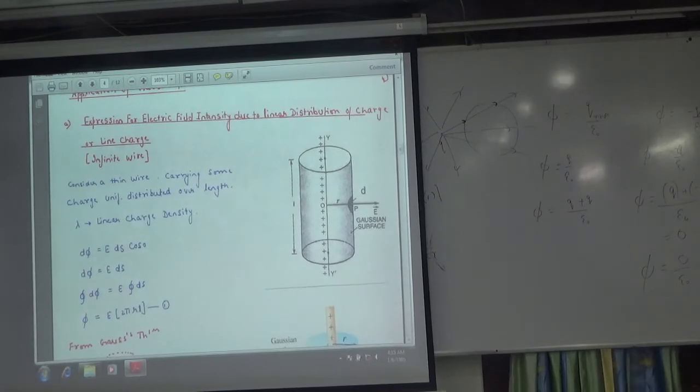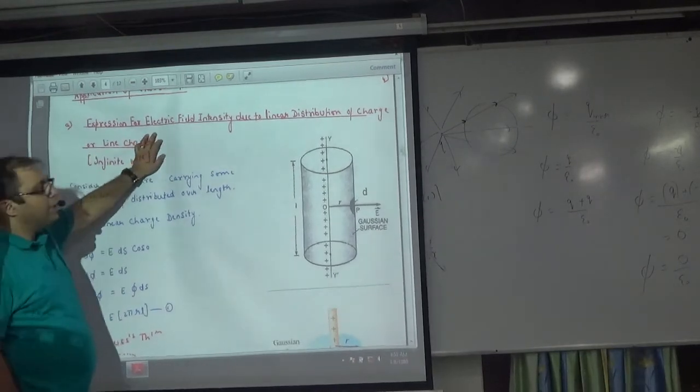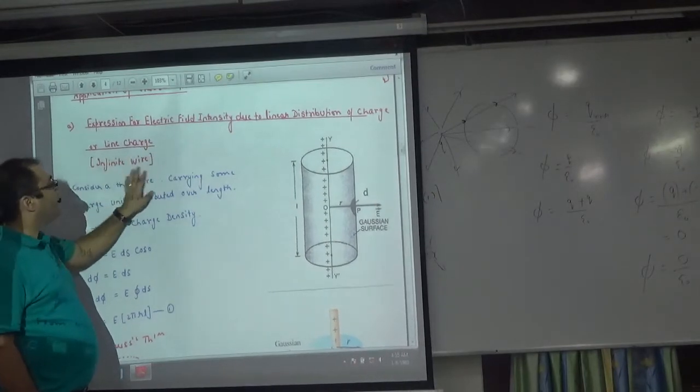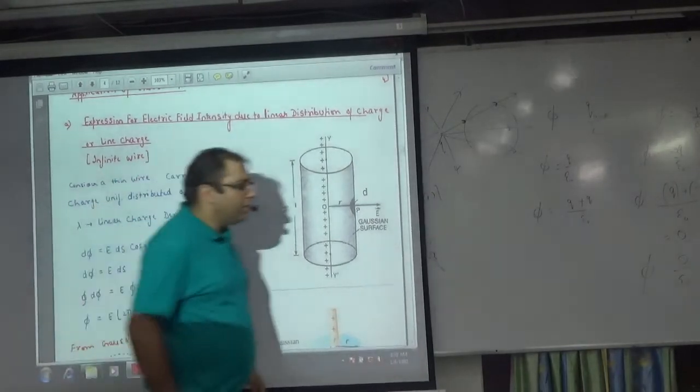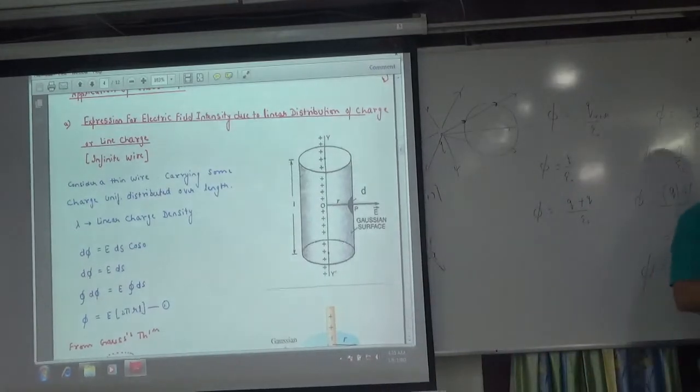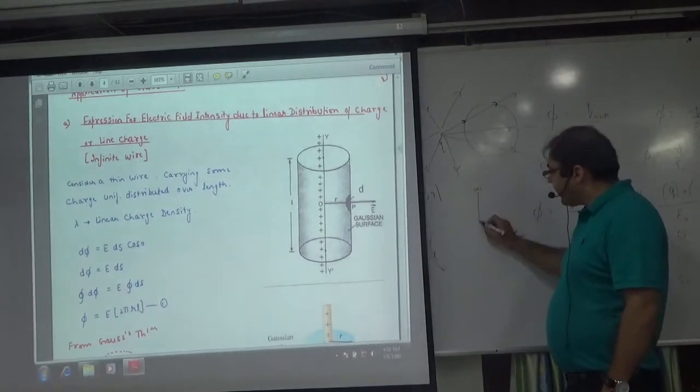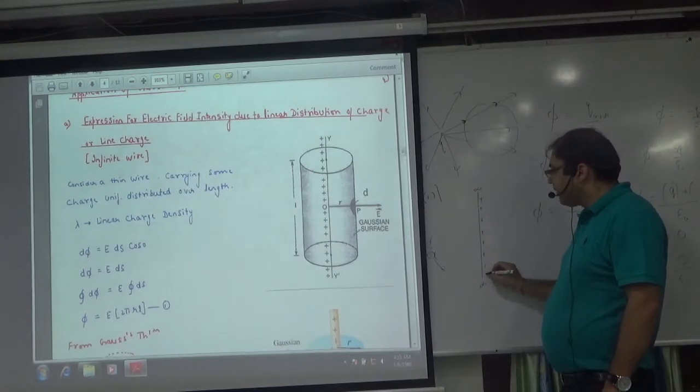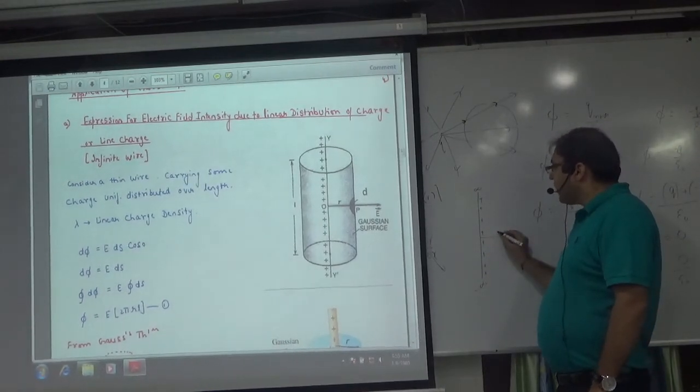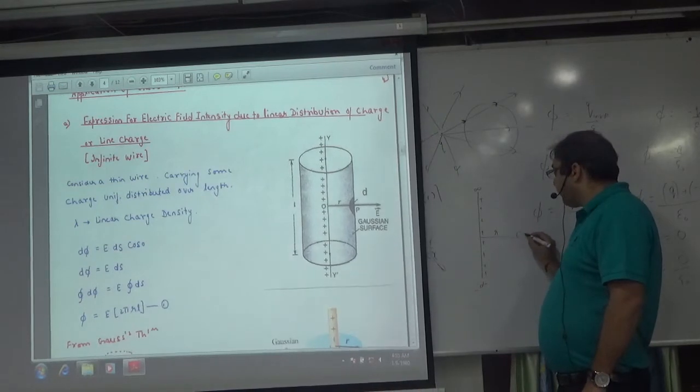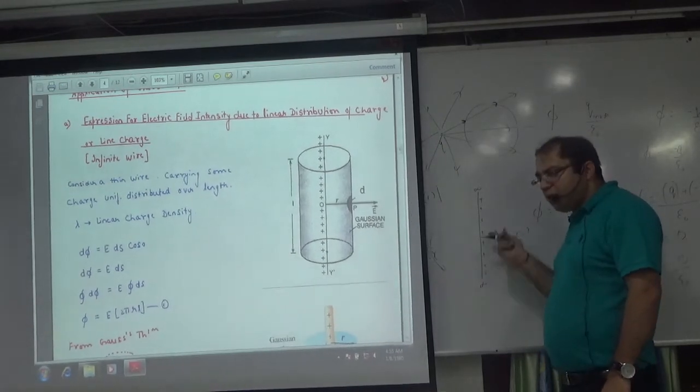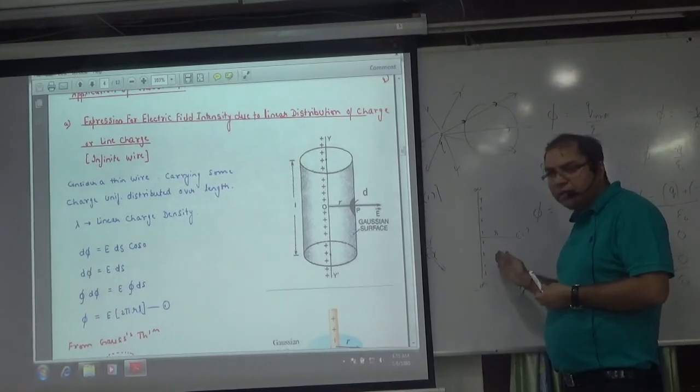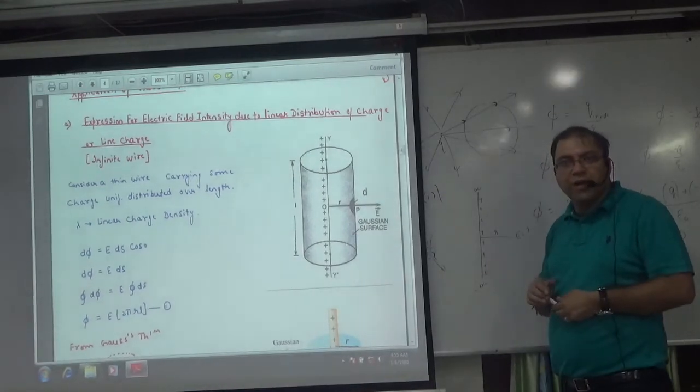Important is expression for electric field intensity E due to linear distribution of charge or infinite wire. That means you have to tell this that this is an infinite wire and charged. And you have to tell this at R distance. Infinite wire, E today we have done. The first expression was this.